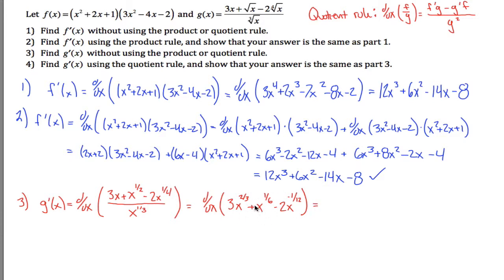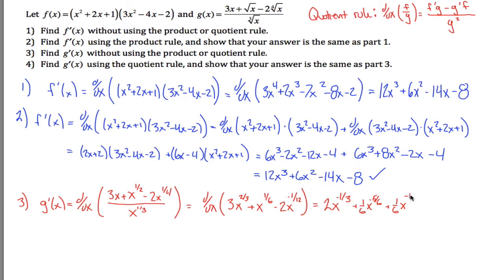So now I want to take the derivative of this rewritten expression — it's just a polynomial, so I can differentiate each term individually. For the first term, using the power rule I bring the 2/3 down in front: 3 times 2/3 is 2, and 2/3 minus 1 is negative 1/3. Then bring the 1/6 down in front; 1/6 minus 1 is negative 5/6. For the last term, negative 1/12 times negative 2 gives positive 2/12 which reduces to 1/6, and negative 1/12 minus 1 is negative 13/12. This is the correct answer — I'm done with the calculus.